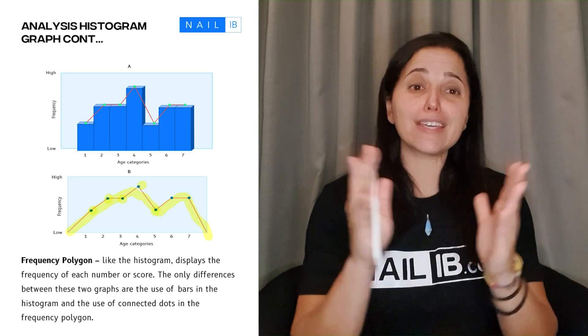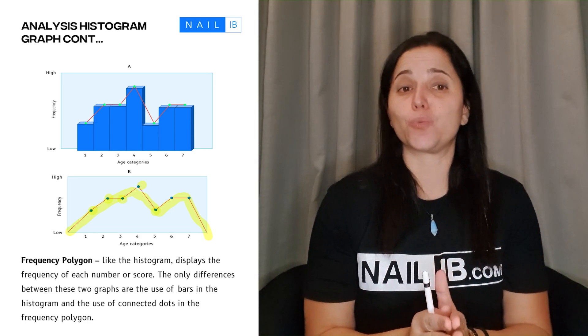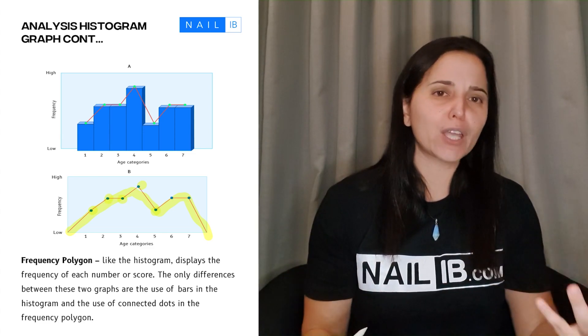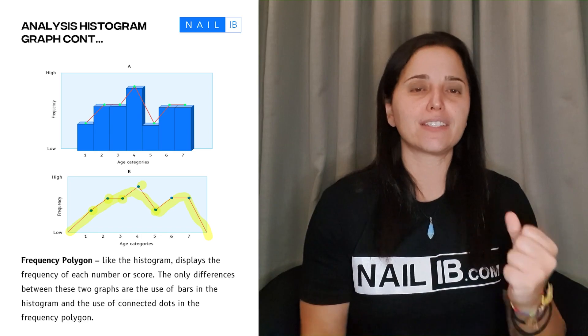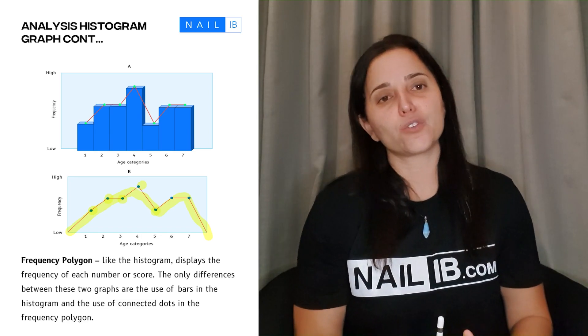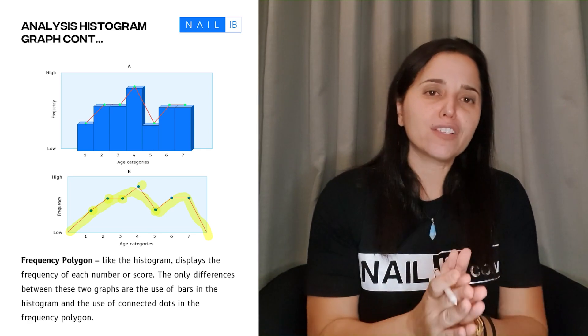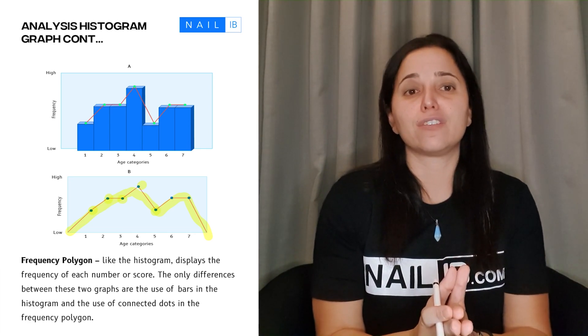This is it for the whole data analysis sections. We did talk about the raw data, the quantitative, the qualitative, using the right words and the units and uncertainties. And we did also the processed data, which is all the calculations and the graph. If you follow these instructions, there's no chance that you're going to lose any points on this section. We're done with the data analysis. And now, we're going to go to the evaluation and the conclusion and tell you what are the things that you need to write there. So, remember, with NAOB, you can get that set and just follow through. And I'll see you on the next video.